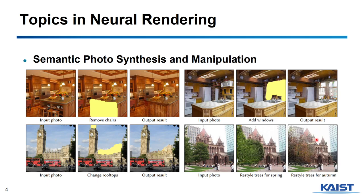There are many topics in neural rendering, so I want to introduce some of them today. The first one is semantic photo synthesis and manipulation. In this topic, we want to add some objects, remove some objects, or manipulate some objects. For example, in this picture, we want to change the style of trees. In semantic photo synthesis and manipulation, we want to do this process while preserving the semantics of the photos.